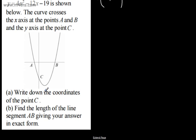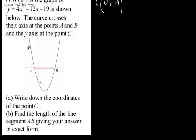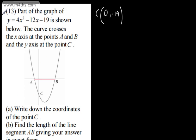In part B, we need to find the length of the line segment AB, giving our answer in exact form. So we're looking at the distance from A to B. That's on a straight line as they'll have the same y-coordinate. How I'm going to do this is find the coordinates of A and B by setting y equal to 0 and then solving.